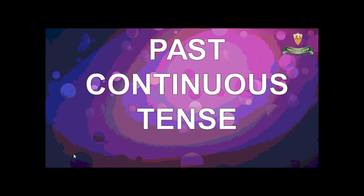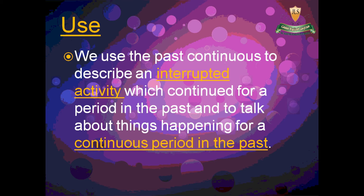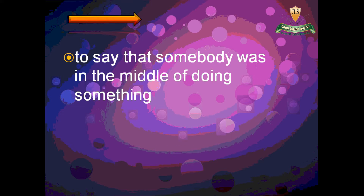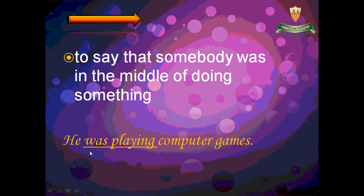Hello everyone. Today we're going to talk about past continuous tense. We use the past continuous to describe an interrupted activity which continued for a period in the past, to talk about things happening for a continuous period in the past, or to say that somebody was in the middle of doing something. For example: he was playing computer games.